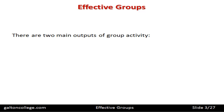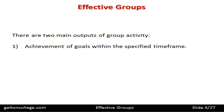This video will be concerned with effective groups and what makes effective groups. There are two main outputs of group activity. First of all, achievement of goals within the specified time frame. We measure group activity and the success of group activity if they meet their specified goals within the specified time frame. That's the first measure of effectiveness of a group.